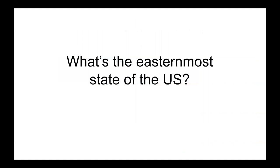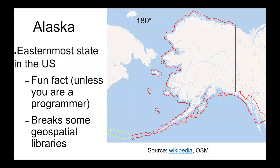Here's a bit of trivia: What's the easternmost state in the United States? If you're thinking Maine, you'd be wrong — it's actually Alaska. The reason is that the Aleutian Islands cross the 180th Meridian, making them technically further east than the rest of Alaska. This is a fun fact unless you're a programmer, in which case it probably horrifies you — it also breaks some geospatial libraries. Wikipedia's diagram of Alaska was also broken, so I had to draw in the actual borders myself in yellow. To mitigate this, I simply excluded that part of Alaska from my analysis, as it's relatively unpopulated.